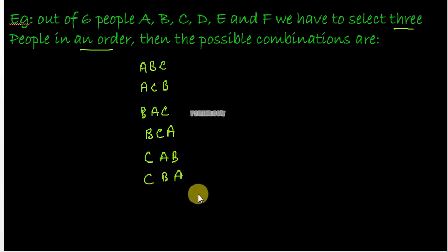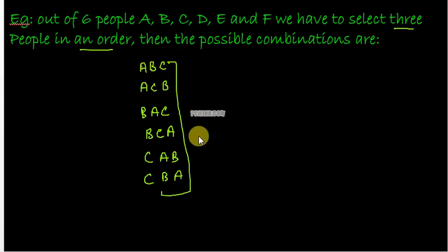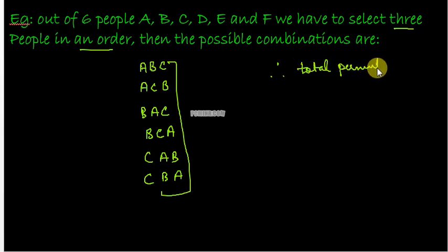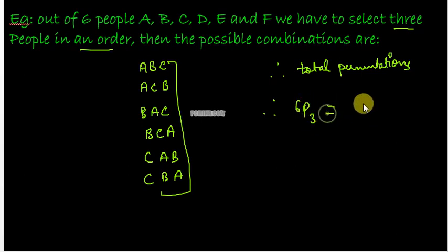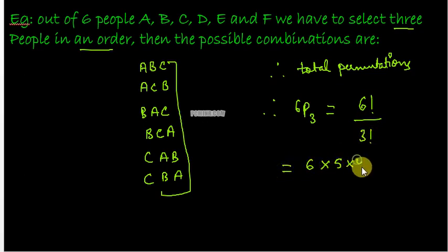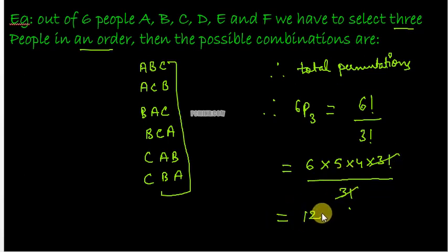So the order matters, and therefore there are six possible options for these three persons to be arranged in a specific order. Similarly, you can arrange D, E, F in multiple ways. Therefore, the total permutations to arrange three people out of six — choosing only three out of six and arranging them in a specific order — is 6P3, which equals 6 factorial upon 3 factorial. That gives us 6 × 5 × 4 = 120. So there are 120 permutations to arrange three chosen people out of six in a specific order.